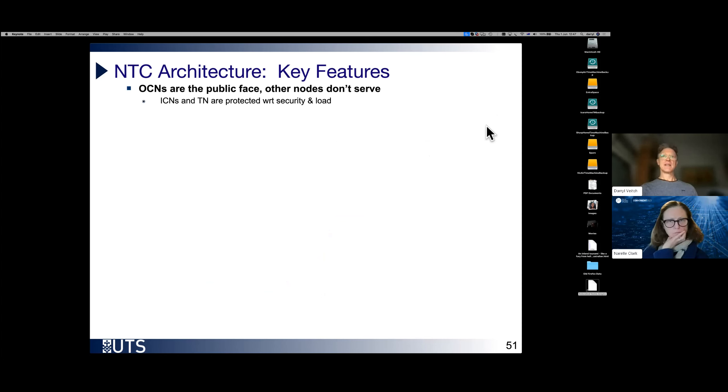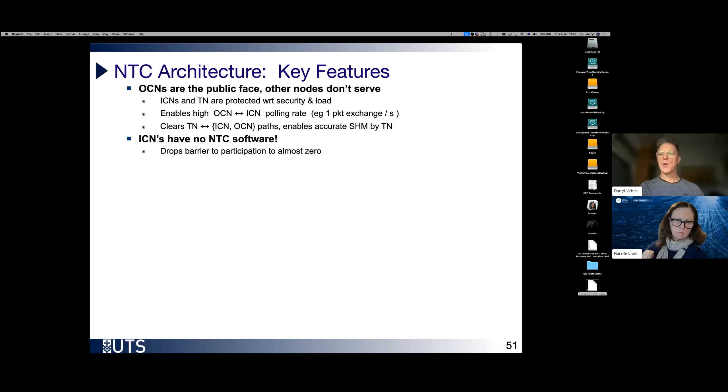Some of the key features of this, these OCNs, the outer core nodes, at the public face, they serve customers where the other nodes do not. This has a number of advantages listed here. The ICNs, the inner core nodes, have no NTC software. They're just normal stratum one ones. So this is a huge advantage. It means that we can co-opt stratum ones and we can encourage stratum one providers to participate in an NTC. They're never going to do that if we said, oh, just adopt our software, there'll never be any problem. Don't you worry. They'll never do it. This means that we can make use of the expensive stratum ones out there. This is the whole point.